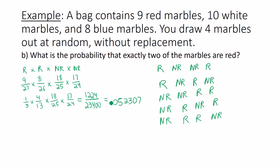So what you do is you take this probability we calculated and multiply it by six. So six times 0.052307, which this will be our final answer. So go ahead and round to three decimal places you get 0.314. That is the probability you get exactly two red marbles.